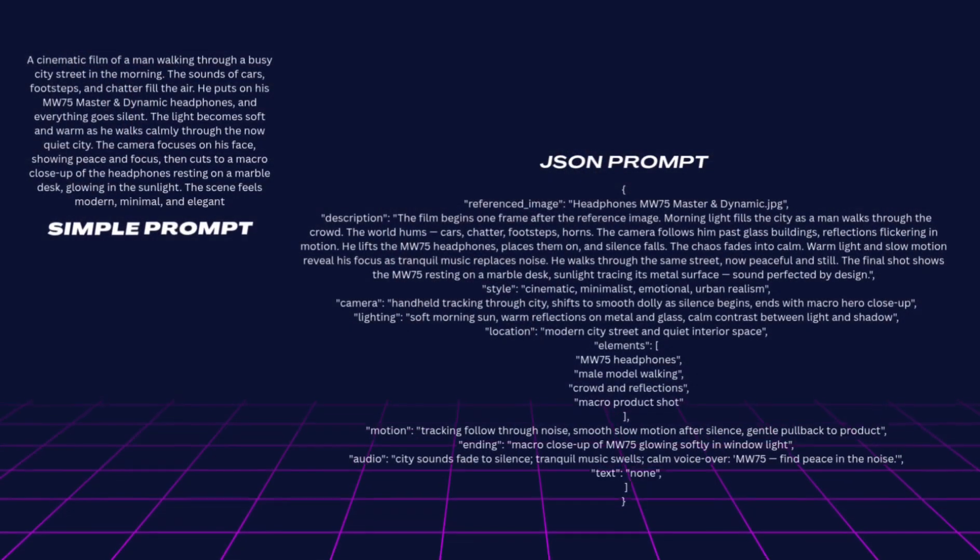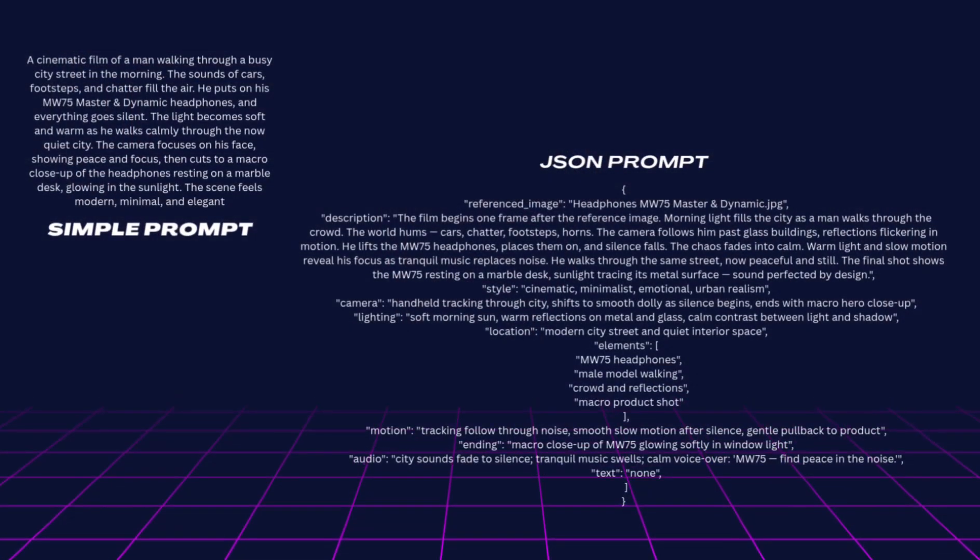And when you see a simple text prompt next to a JSON prompt, the difference is clear. It's the difference between a clip and a commercial, between control and guessing.